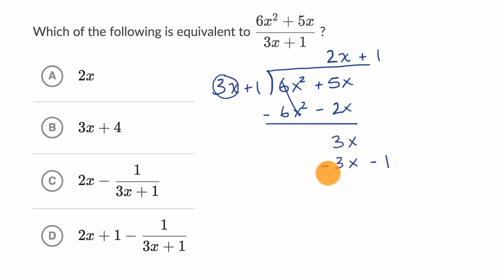Now we want to subtract this. And we are going to be left with, those go away, and you're just left with a negative one. And you can't divide three x anymore into negative one.